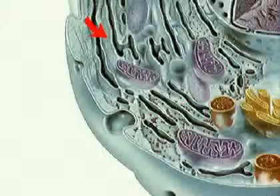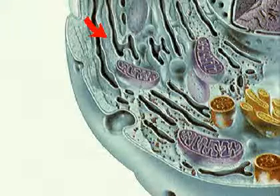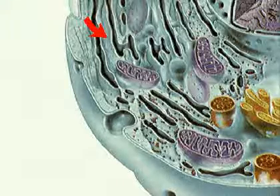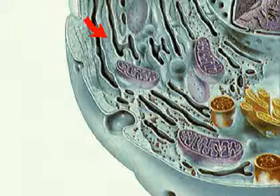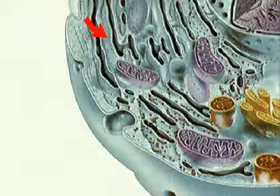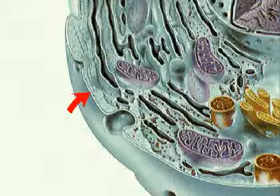Cytoplasm is the watery medium of the cell in which all the structures are suspended. Most of the work of the cell is carried on in the cytoplasm. The cell membrane is a soft, pliable skin, which acts as a control gate for the entry and exit of substances involved in cell function.